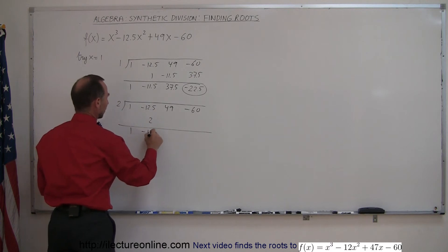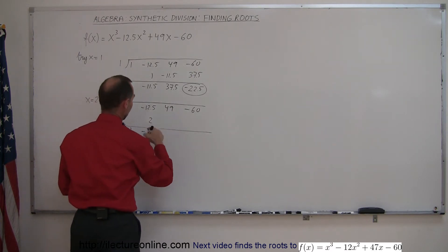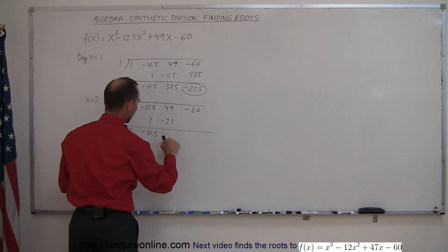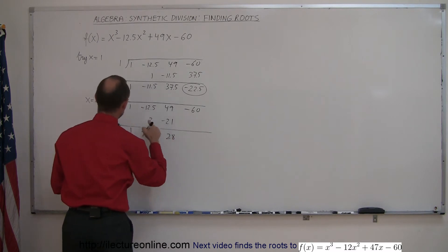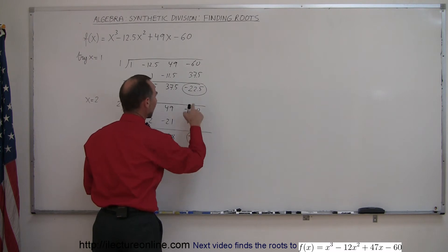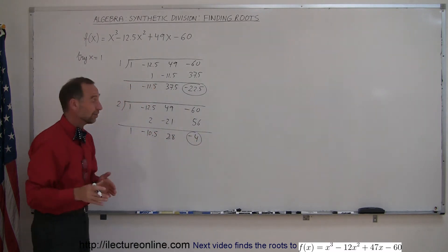Minus 10.5 times 2 is minus 21. Add those together you get 28, 28 times 2 is 56, add those together you get minus 4. Now notice how we got a lot closer to zero, which means we're zeroing in on what the root is.